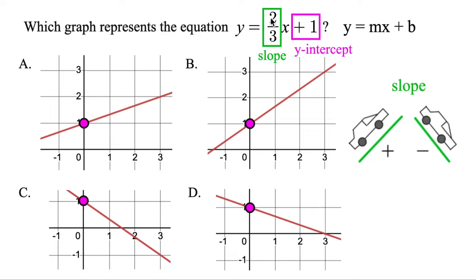Notice we have a positive two-thirds, so we want the line to go uphill. Option A does have a positive slope, and same with B. But C and D — we're driving downhill, those are negative slopes, so those are no good.